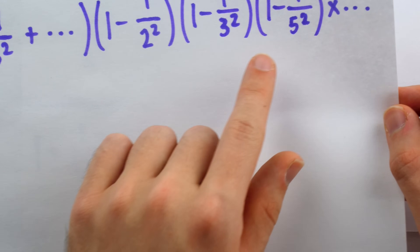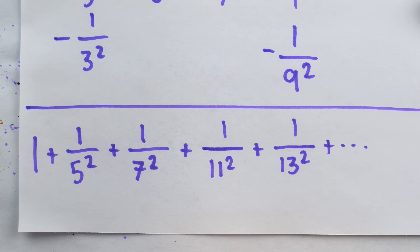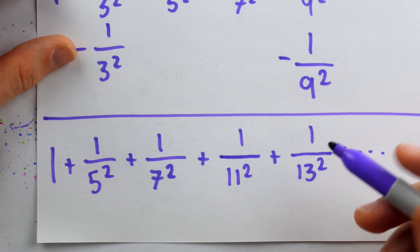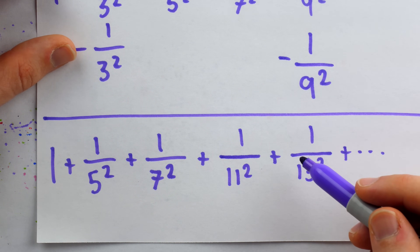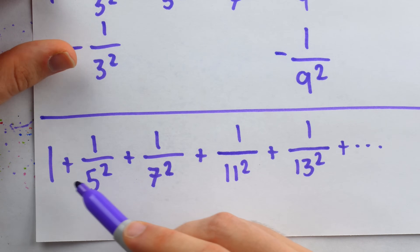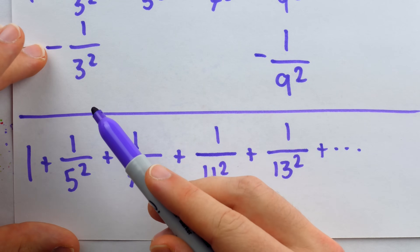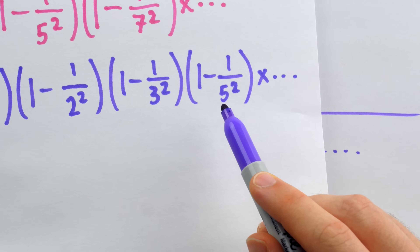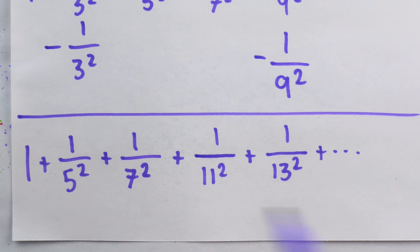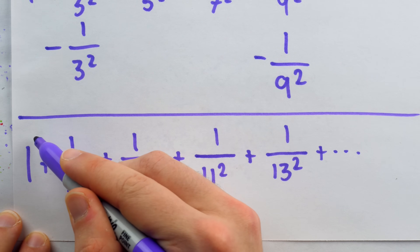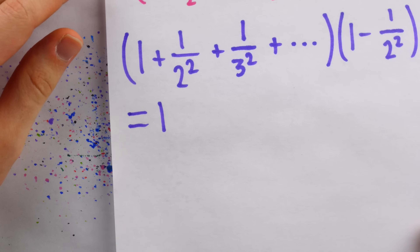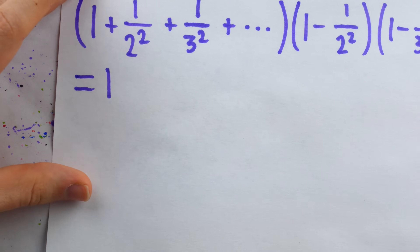Then multiplying by (1 - 1/5²) would get rid of all remaining multiples of 5. Notice from a greater point of view: the series is 1 plus a bunch of reciprocals of squares, which are small numbers — like 1/169 — and only get smaller. As we continue the multiplication, more and more terms cancel out, and in the long run all of them get canceled eventually, because the infinite product covers all prime numbers. So the series approaches 1, confirming that the infinite sum times the infinite product equals 1.